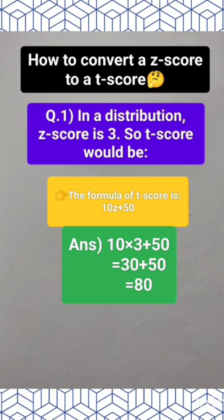Here, a question has been given. This question says that in a distribution, z-score is 3, so what would the t-score be?